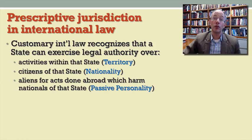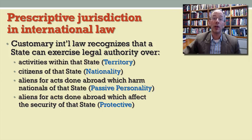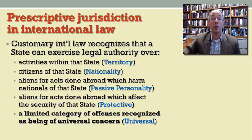A fourth basis for jurisdiction is known as the protective principle, which applies with respect to extraterritorial conduct that nevertheless harms a state's security interests. We're going to focus on the fifth basis of jurisdiction, which is universal jurisdiction.